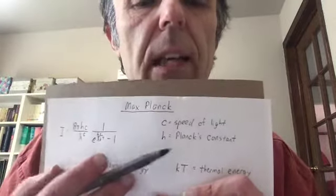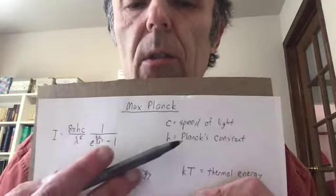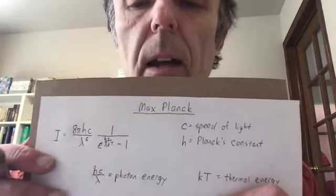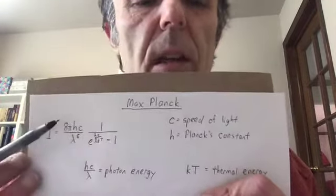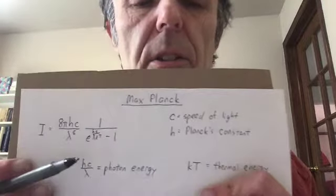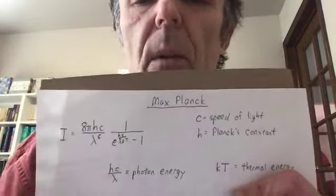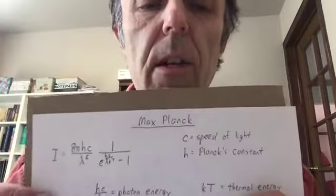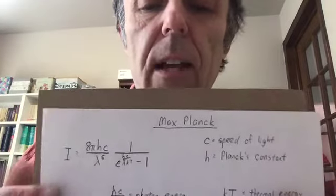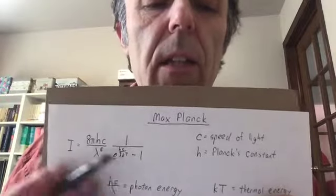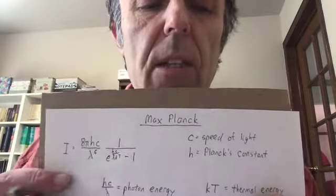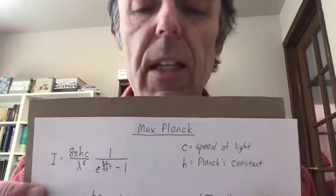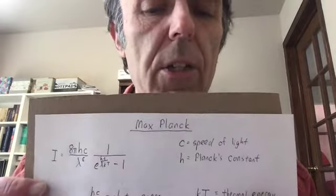This equation contains Planck's constant, so it's a quantum mechanical equation. It contains c, the speed of light, so it also has relevance to relativity. When you have an equation like this, it's rather complicated. Equations are not just something you put numbers into. Equations tell an entire physical story, and to extract that story, you have to look at limiting cases of an equation.